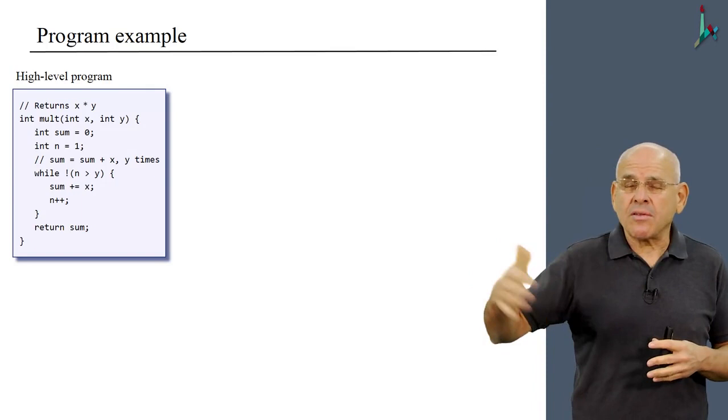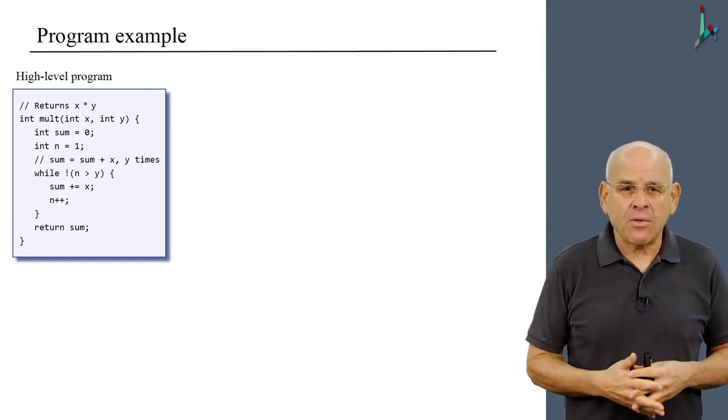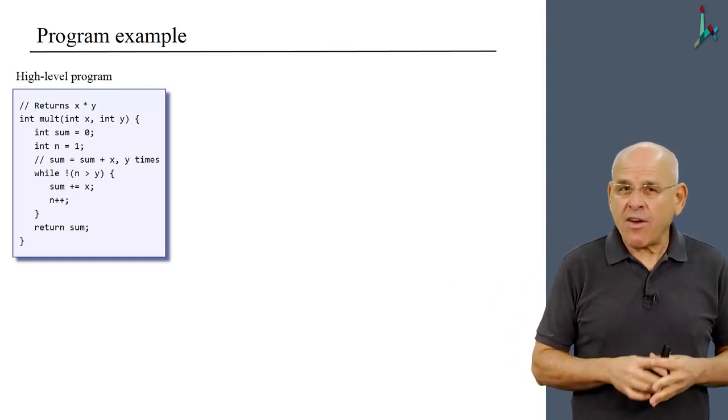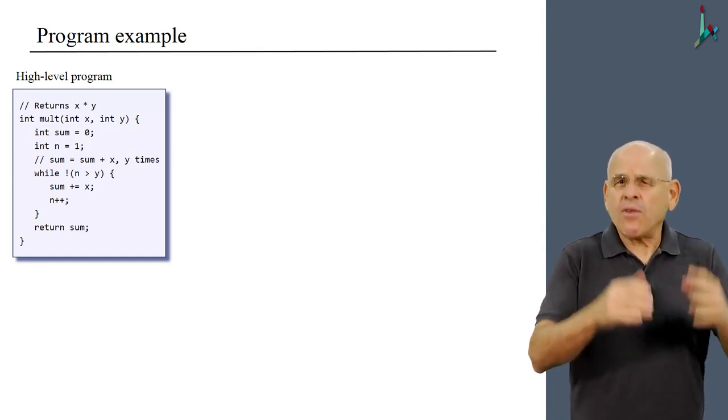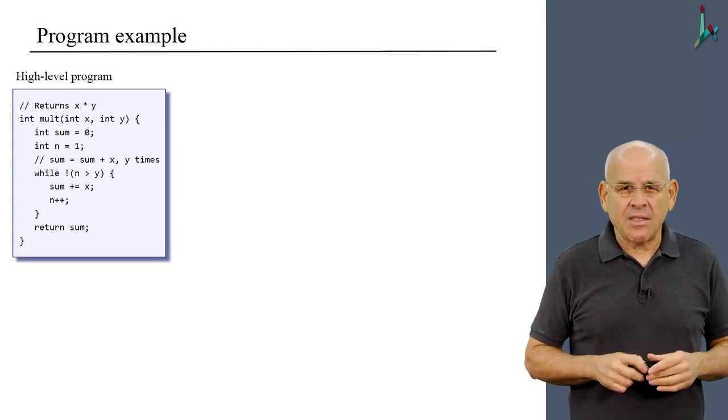And in order to count y times, we use yet another variable called n, which starts with one. And you can read the code and understand this, it's rather trivial.